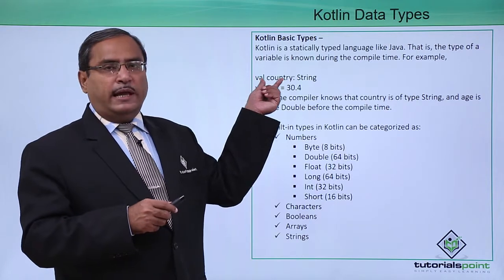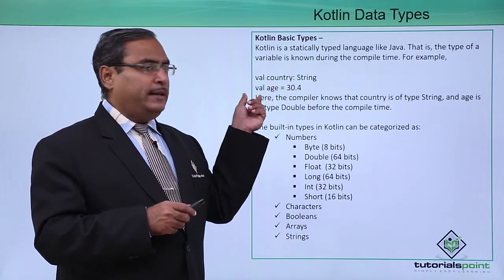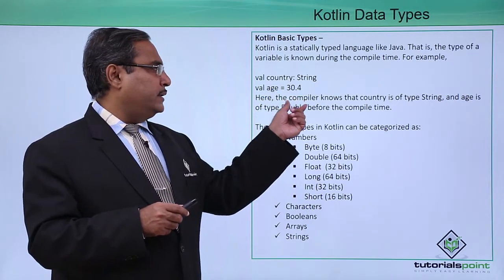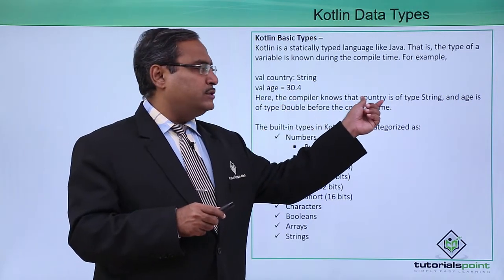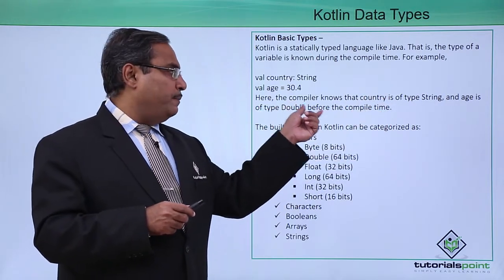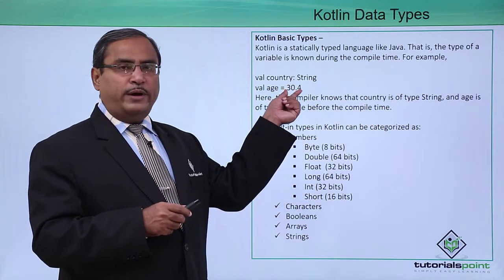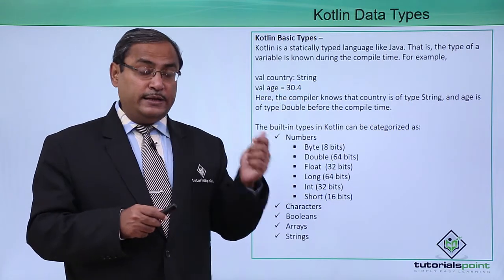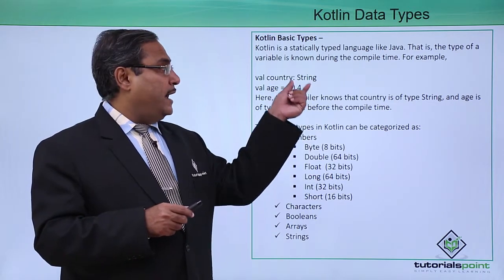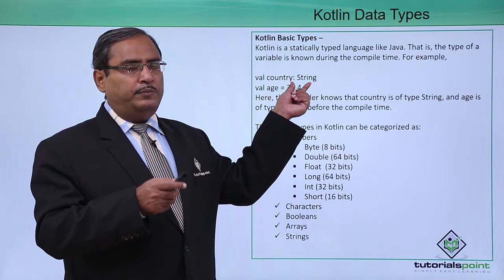Here we have defined variables like country — val country colon String — and val age is equal to 30.4. The compiler knows that country is of type String and age is of type Double before compile time, because whatever value we assign to age decides its respective data type. And here we have mentioned explicitly that country will be of type String.